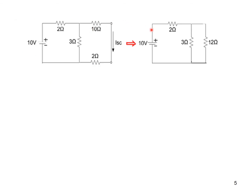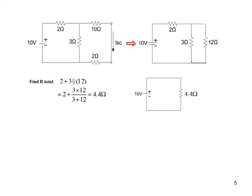This circuit can be redrawn: these two resistances are now in series. To find the total current we first find total resistance, which is 2 plus (3 and 12 in parallel), so R total equals 4.40 ohm. We can draw the equivalent circuit with 10 volt and resistance 4.4, so total current is V over R — 10 volt divided by 4.4 equals 2.27 ampere.